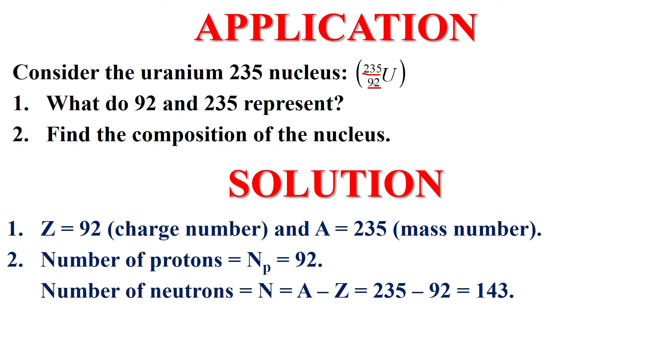As we said before, the number below Z is called charge number. That means Z equals 92 which is charge number. And the number above is denoted by A which is mass number.